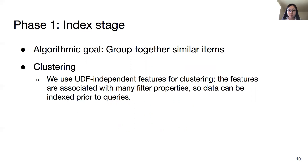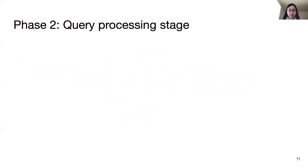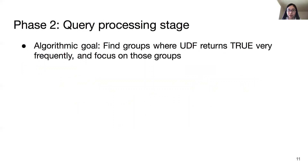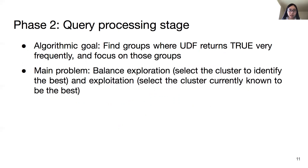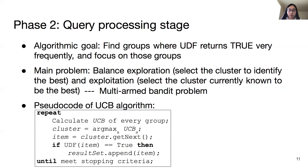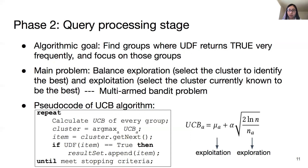In phase two, the goal is to find groups where the UDF returns true very frequently and focus on those groups. The problem is how to balance exploration — selecting a cluster to identify the best one — and exploitation — selecting the cluster currently known to be best. This is a multi-armed bandit problem. The popular algorithm to solve it is the Upper Confidence Bound (UCB) algorithm. Every group's UCB is calculated and the cluster with the highest UCB is selected. The UDF is run on one item in that cluster to decide whether it should be added to the result set, and the loop repeats until meeting the stopping criteria. In the UCB formula, mu_A is the average reward of group A, n is the total number of selections, and N_A is how many times group A has been selected. The formula contains an exploitation term and an exploration term, and the parameter alpha balances them.